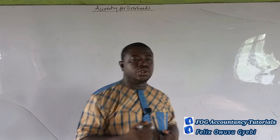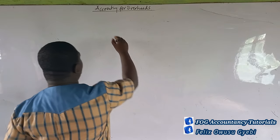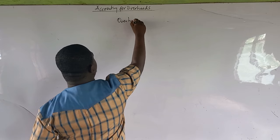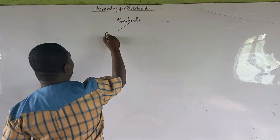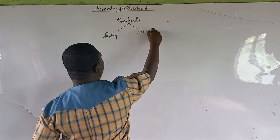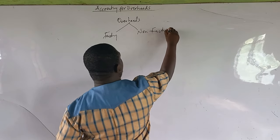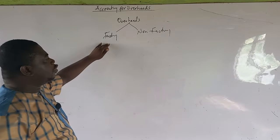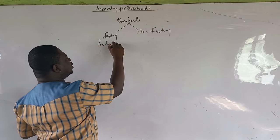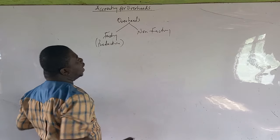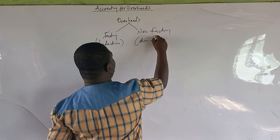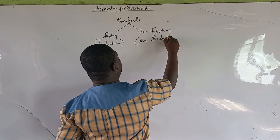Overheads are in two parts. We have factory overheads and non-factory overheads. Factory overheads are also called production overheads, and non-factory overheads are also called non-production overheads.